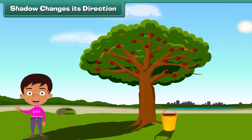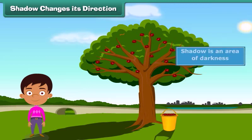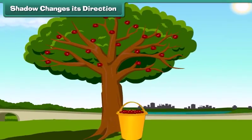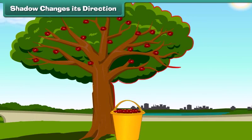Hi, friends. At first, let's discuss what a shadow is. Actually, a shadow is an area of darkness which is formed when the light is blocked by an object.